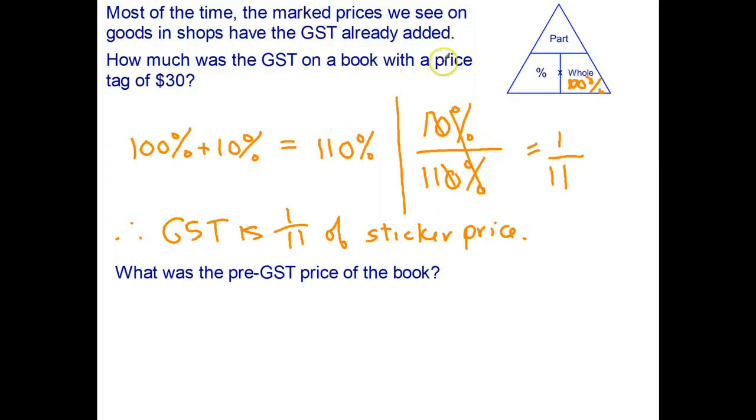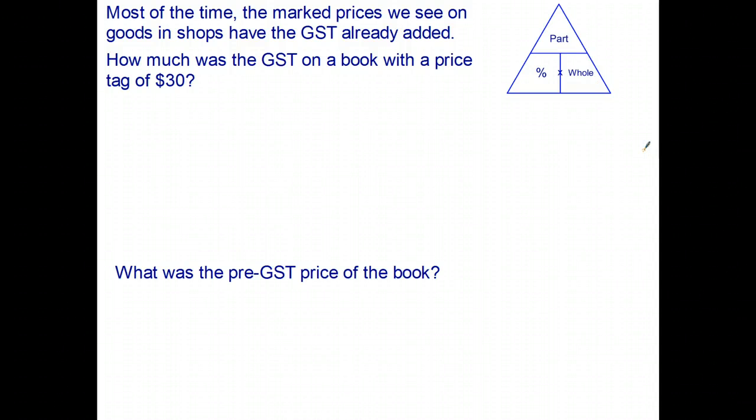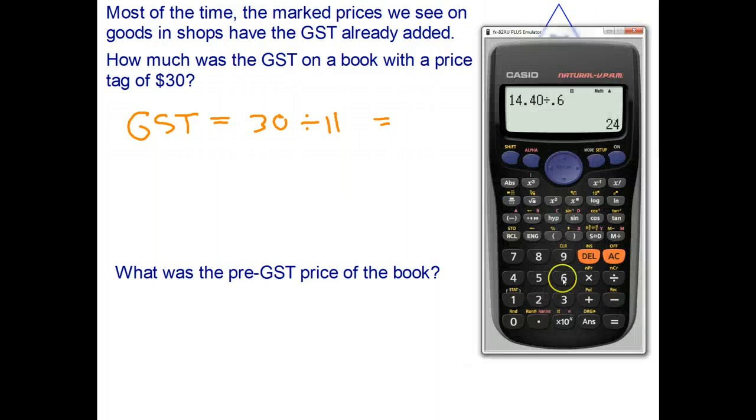How much was the GST on a book with a price tag of $30? Just divide that by 11. The nice little shortcut: the GST is just 30 divided by 11. I'll do that on my calculator—30 divided by 11—and the GST, rounded to two decimal places, is $2.73.